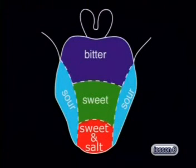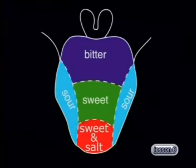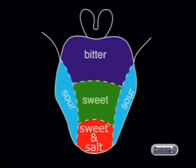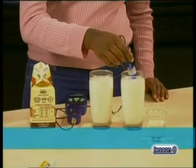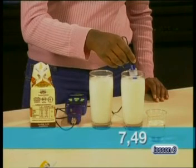Did you know that the tongue has cells that detect different tastes? These sensory cells are called taste buds and are found in different regions of the tongue. So, in a way, the tongue is also an indicator of pH. But we cannot use our tongues all the time, so let's check our pH reading on the pH sensor. The pH of milk is 7.49, so it is therefore slightly basic.